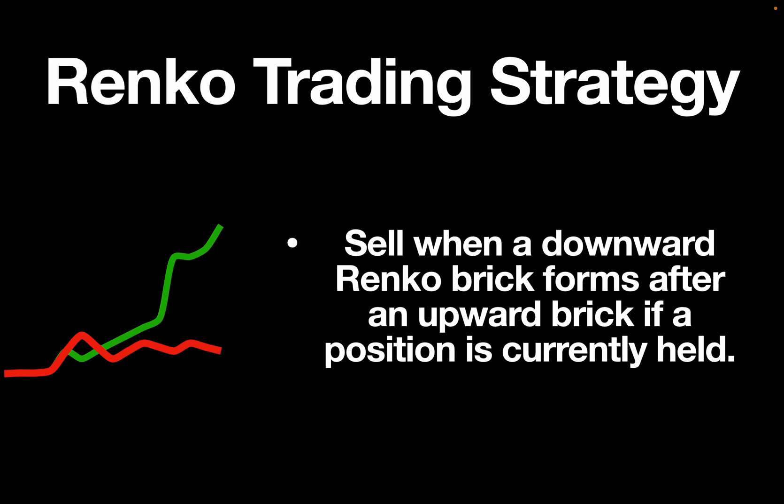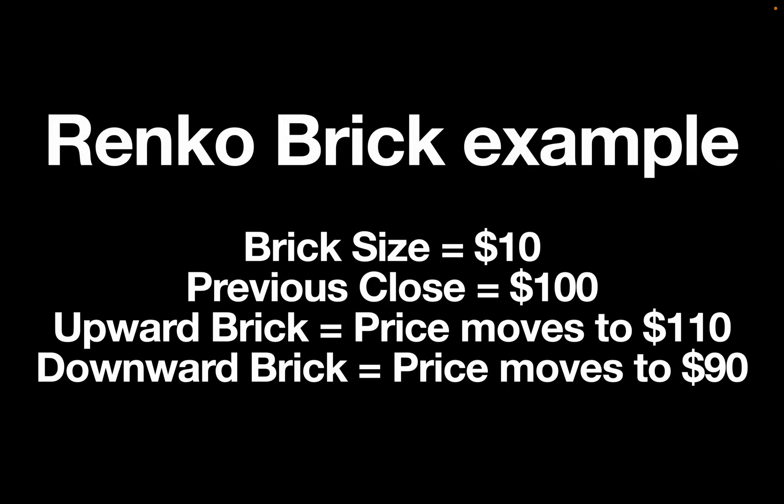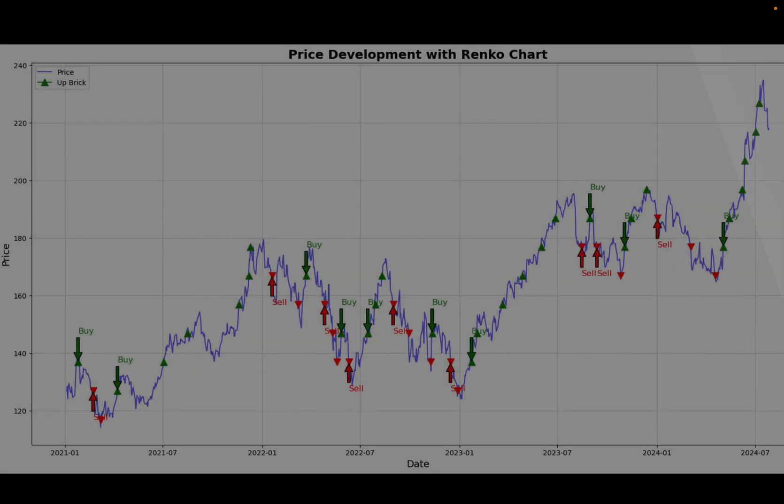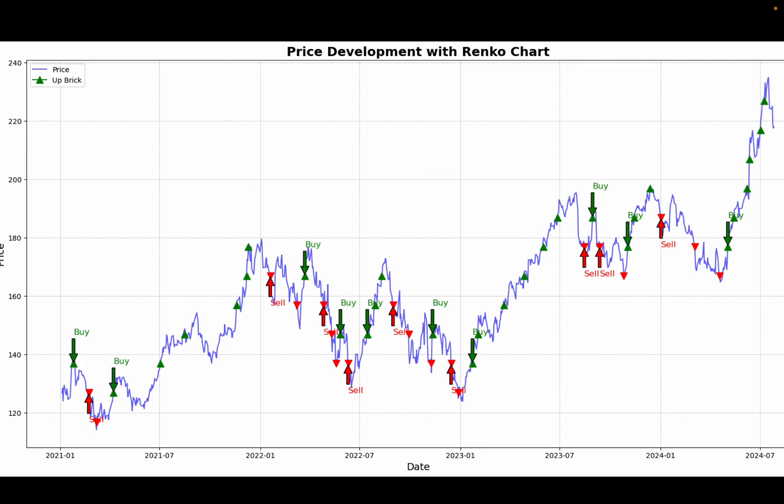Let me give you an example. You have a predefined brick size — let's say 10 US dollars. You have a previous close of 100 US dollars. Then your upward brick is the price moving to 110 US dollars, and your downward brick would be the price moving to 90 US dollars. If you check that for a stock price, you see a couple of upward and downward bricks.